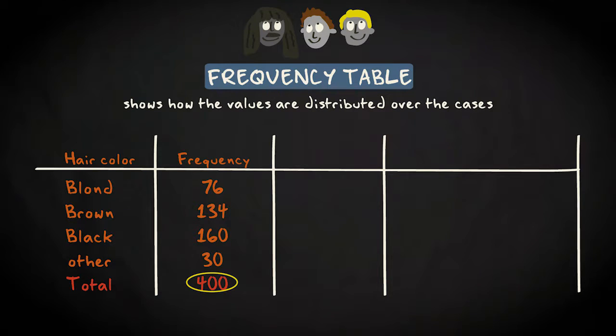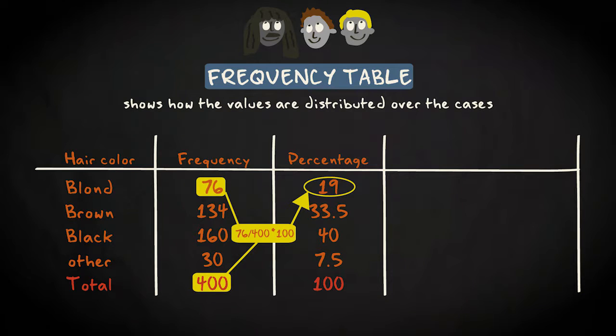We can also express the relative frequencies by means of percentages. In the second column, you see the percentages. You can see at a glance that 7.5% of all players have another hair color than blonde, brown, or black. 19% of the players have blonde hair. You get the value 19 here by dividing 76 by 400 and multiplying that with 100.